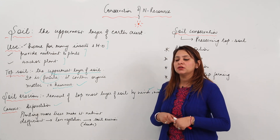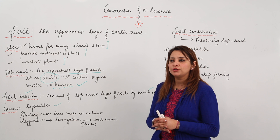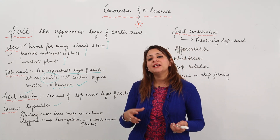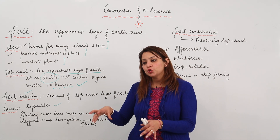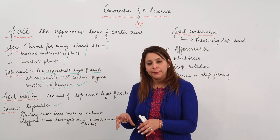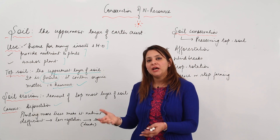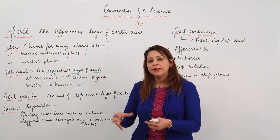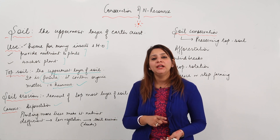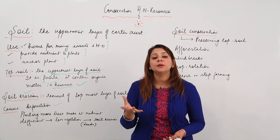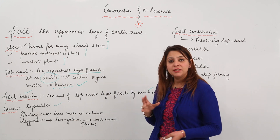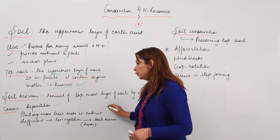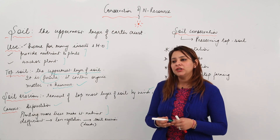One factor that causes soil erosion is deforestation. With modernization we are cutting down trees to fulfill the needs of industries. When plants are present in soil, they hold the soil firmly. When we cut the plants, the soil is left free and becomes loose, and can easily be carried away by wind and water.